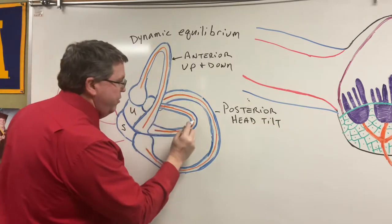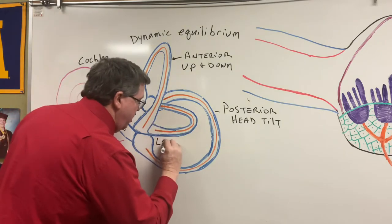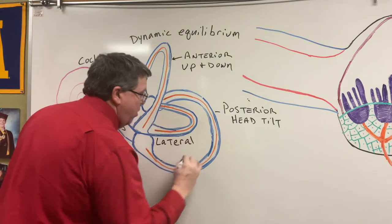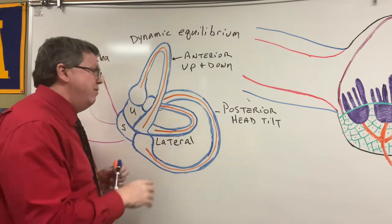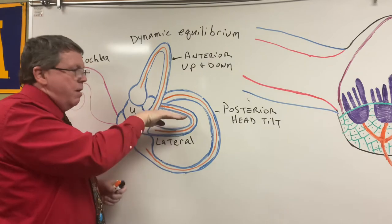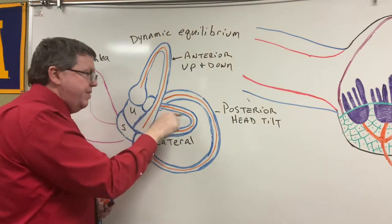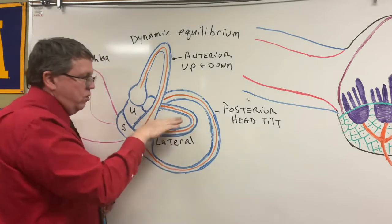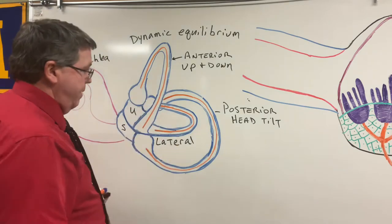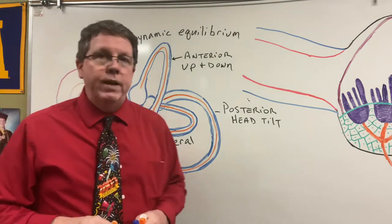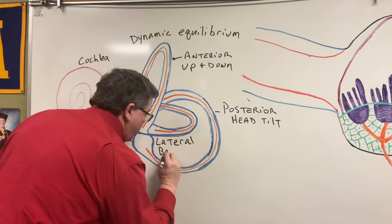The last one we have is called the lateral semicircular canal, also known as the horizontal semicircular canal. The way it's drawn right now it looks upright, but in actuality it would be flat. I only drew it that way so you could see it making a circle. This one is going to be responsible for when I shake my head back and forth.